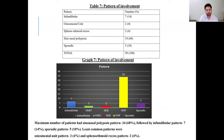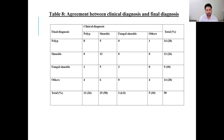Regarding disease patterns, the maximum number of patients had sinonasal polyposis pattern seen in 34 patients, followed by infundibular pattern in 7 patients, sporadic pattern in 5 patients, with the least common patterns being osteomeatal unit pattern and sphenoethmoid pattern. Regarding agreement between clinical diagnosis and final diagnosis: polyp was clinically found in 8 patients, sinusitis in 13 patients, fungal sinusitis in 5, and other diagnoses in 6.